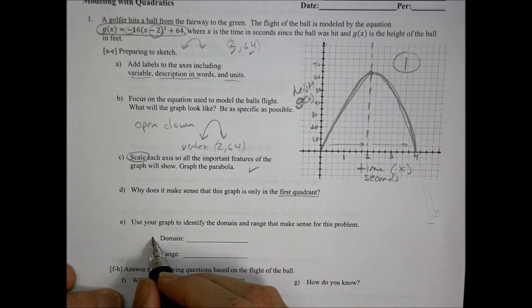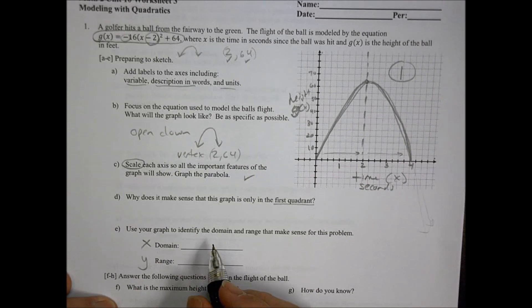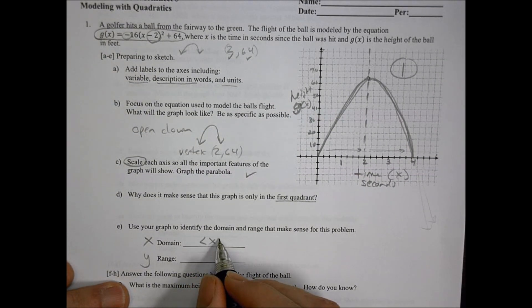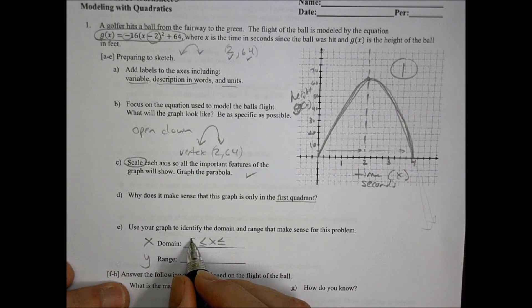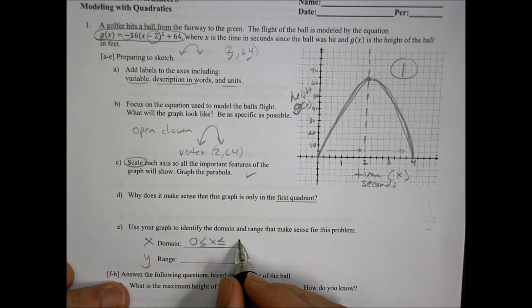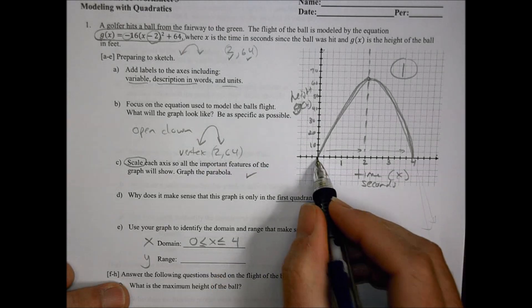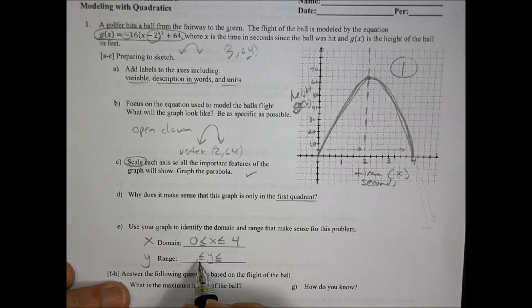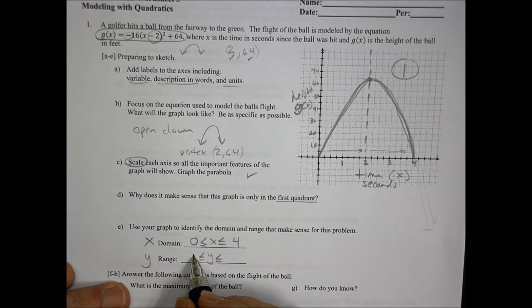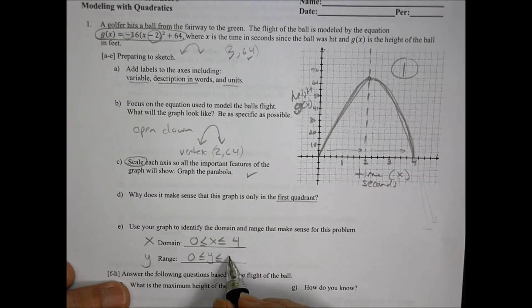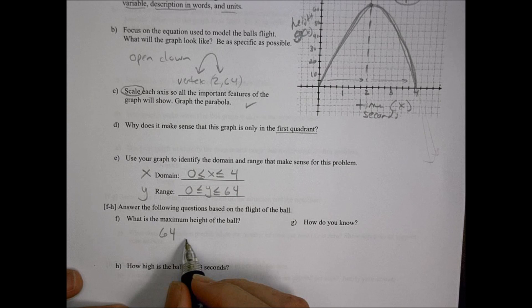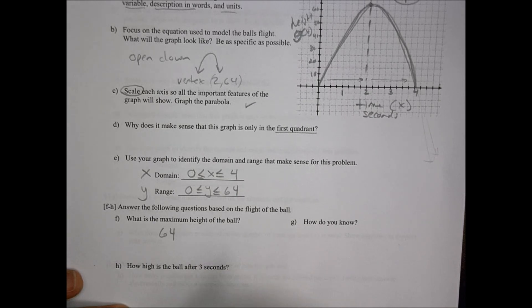Use your graph to identify the domain and range. Domain is all the x values, range are the y values. Because of this graph, there are limitations to the domain and range. X is going to be greater than or equal to zero, but also less than or equal to four. The same is true for the y value. Y is going to be greater than or equal to zero and go up all the way to our maximum 64.